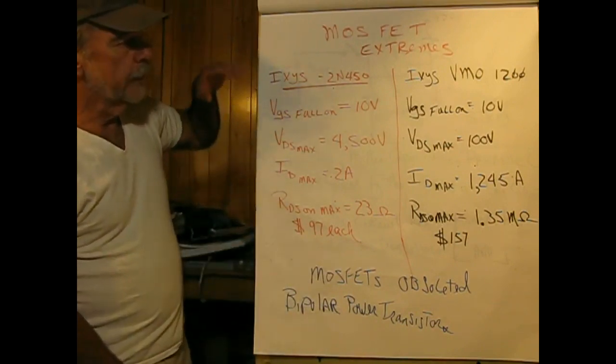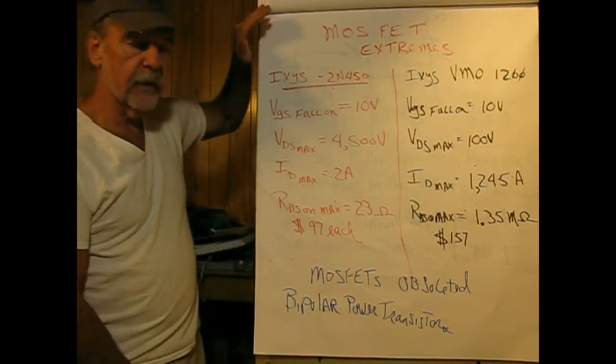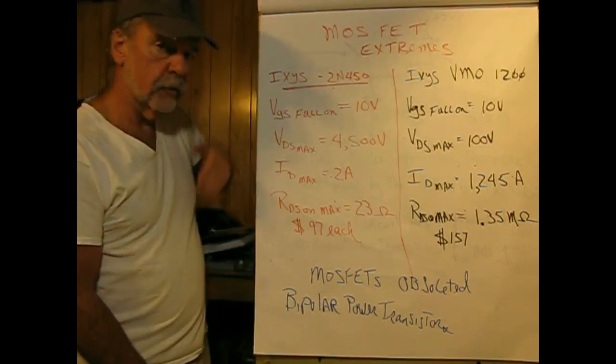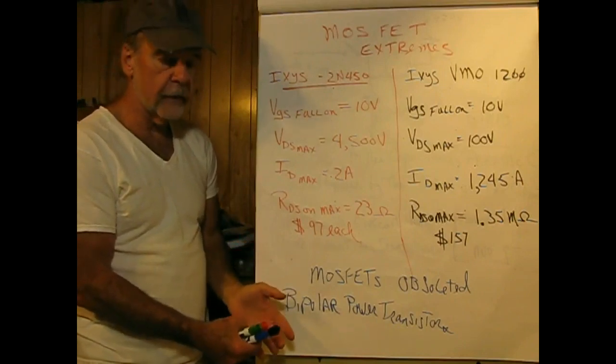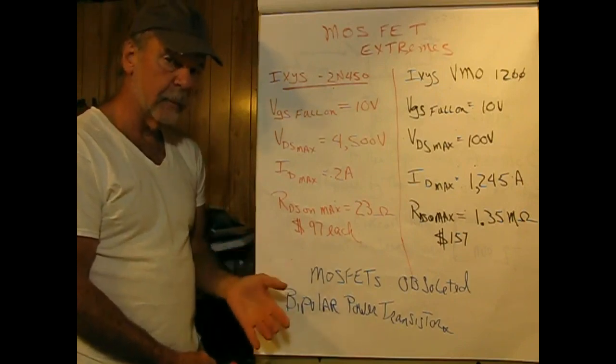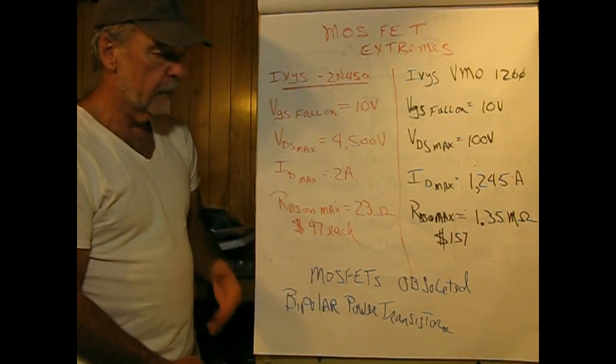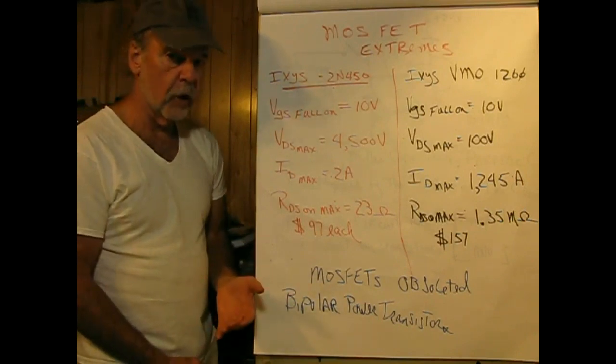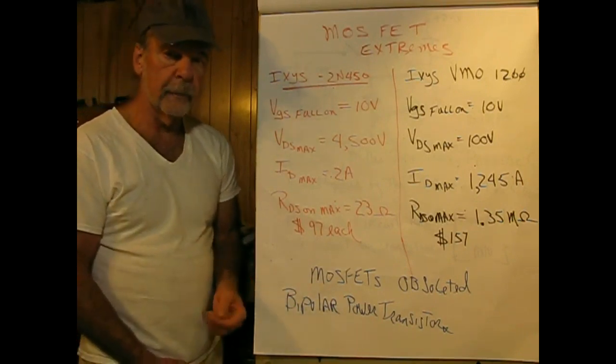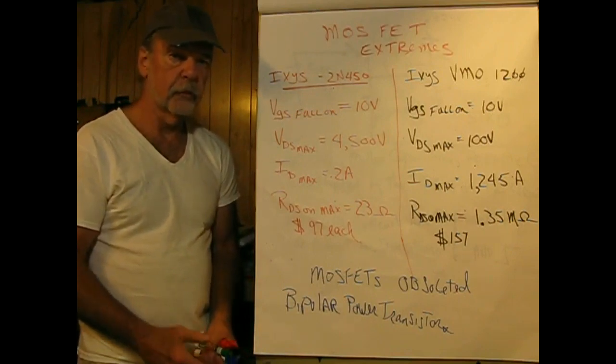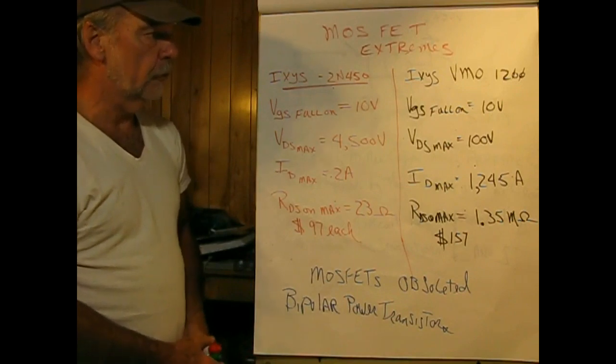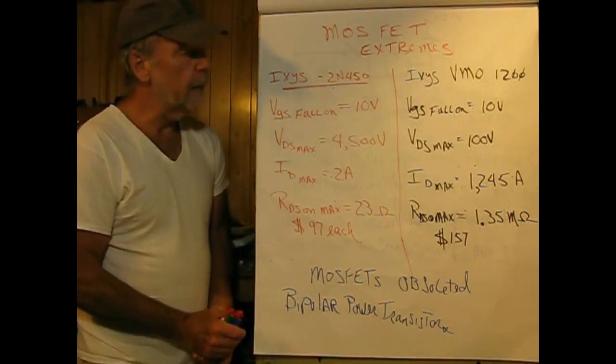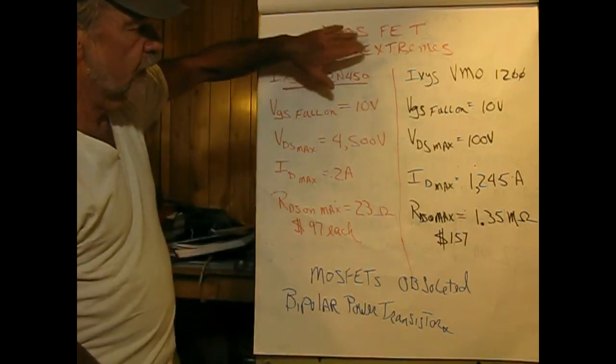Now we're going to get into MOSFETs again today, but we're going to be talking about the transition. Before, we were just talking about the static characteristics. These are the dynamic characteristics when the MOSFET is being switched on and off, as it would be in a typical switch mode power supply under pulse-width modulation, which is very popular. But before we get into that, let's take a look at MOSFET extremes.